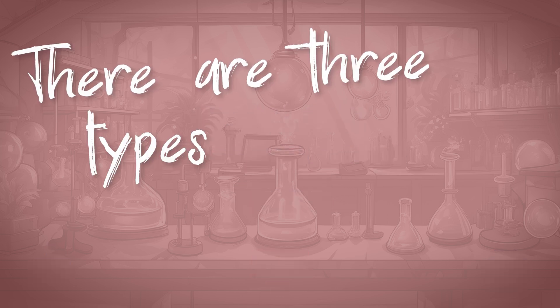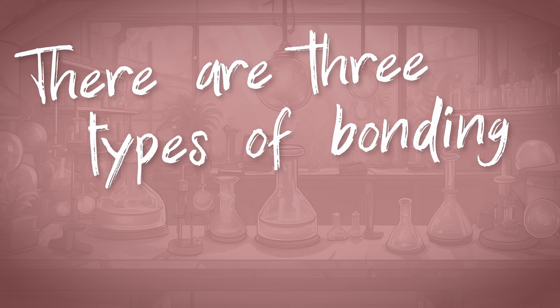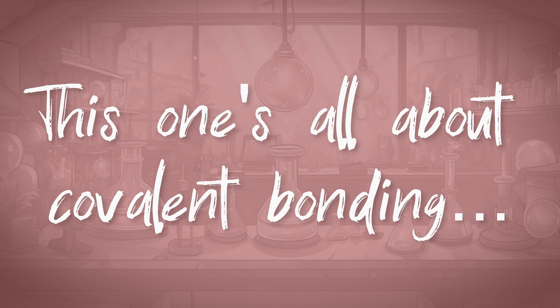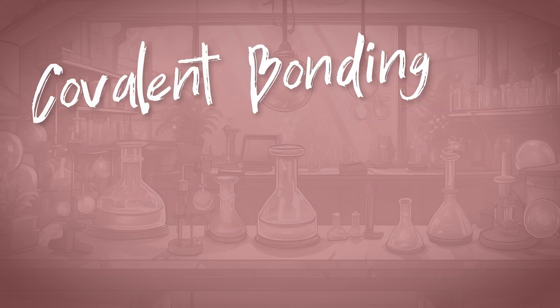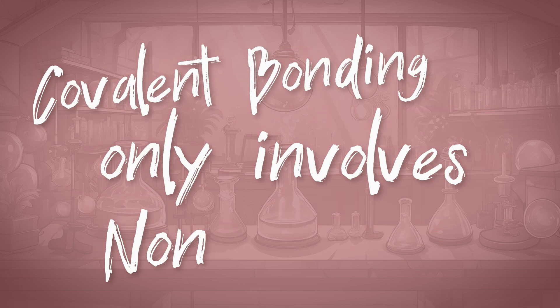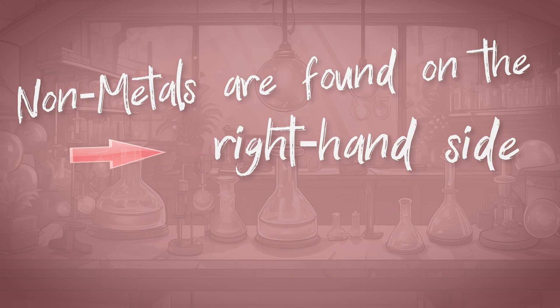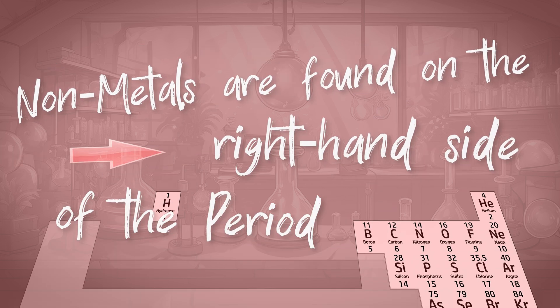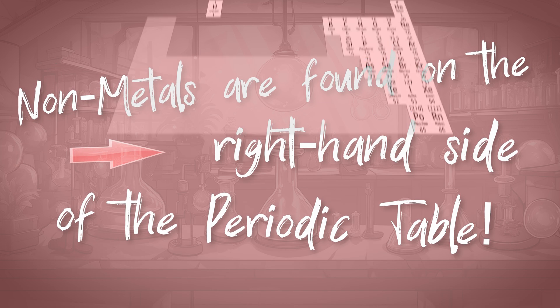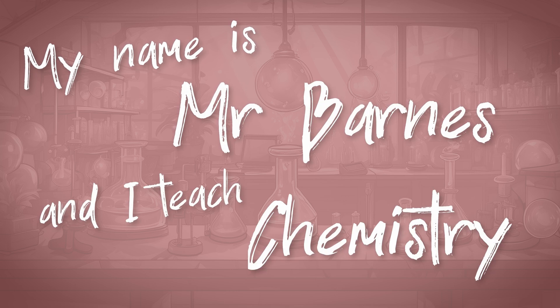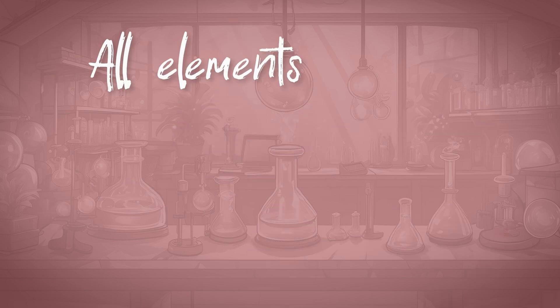There are three types of bonding in the world. This one's all about covalent bonding. Covalent bonding involves non-metals. Non-metals are found on the right-hand side of the periodic table. My name is Mr. Barnes and I teach chemistry.